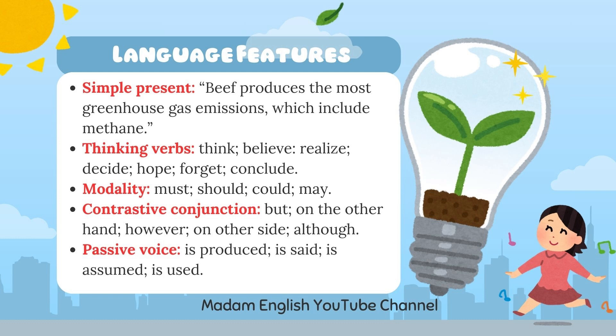Next, we use modality — for example: must, should, could, may. We also use contrastive conjunctions — for example: but, on the other hand, however, on the other side, although. Then, we use passive voice — for example: is produced, is said, is assumed, is used.